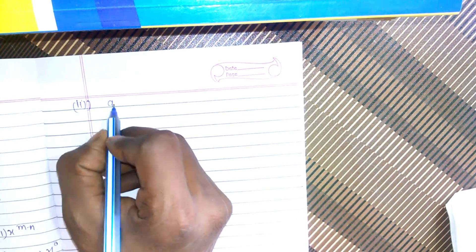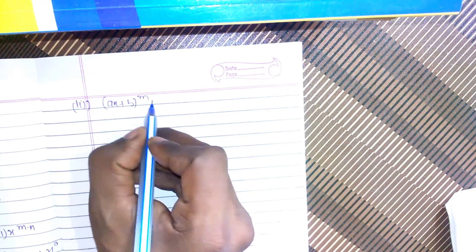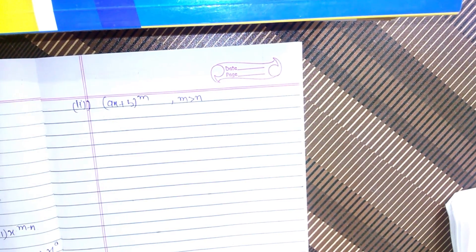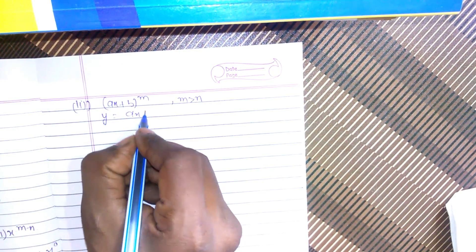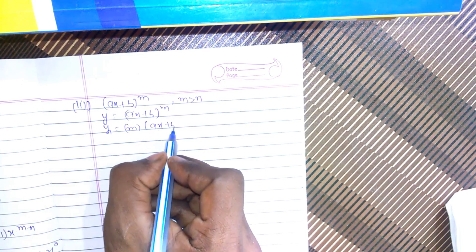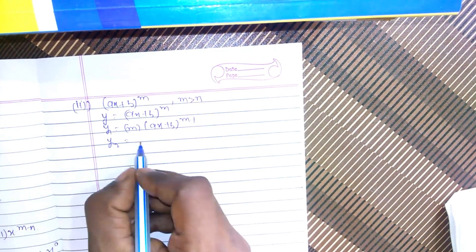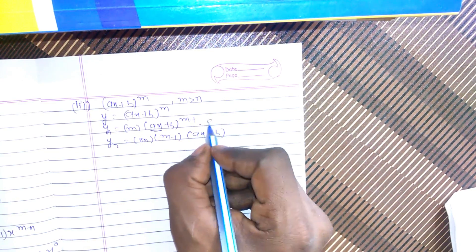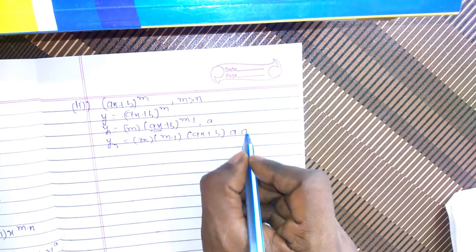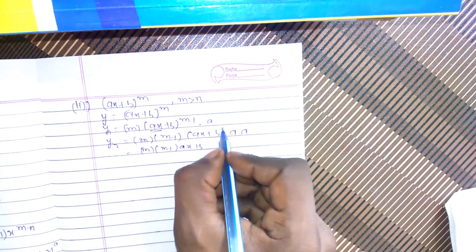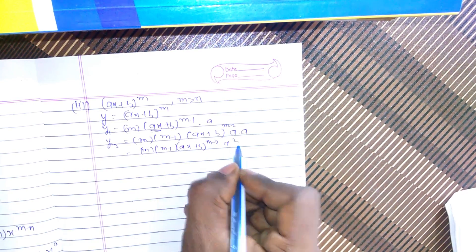The second part: the nth differential coefficient of (ax+b) raised to power m, where m should be greater than n. So y equals (ax+b)^m. Then y1 equals m·a·(ax+b)^(m−1). And y2 equals m(m−1)·a²·(ax+b)^(m−2), noting that each differentiation brings down an extra factor of a.